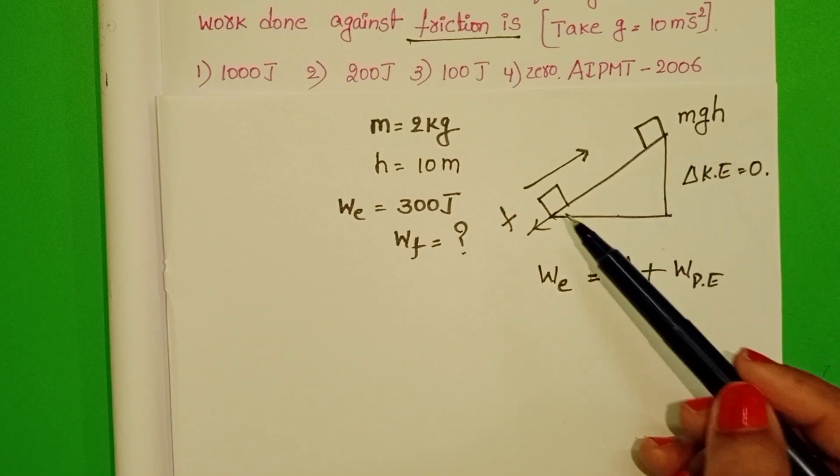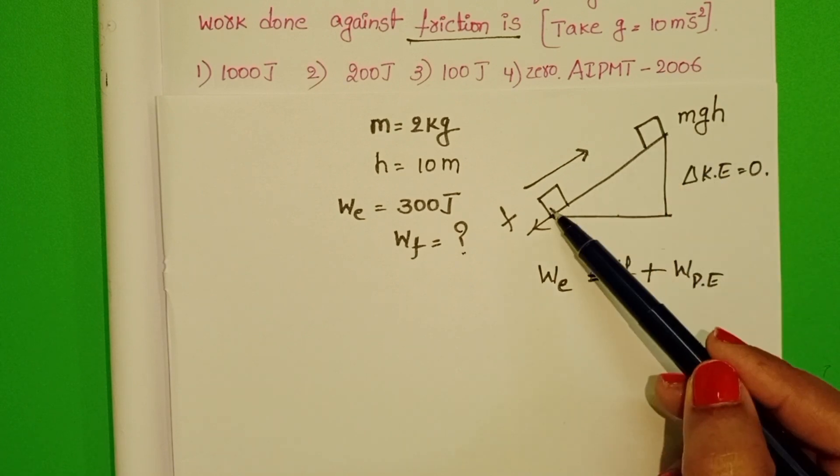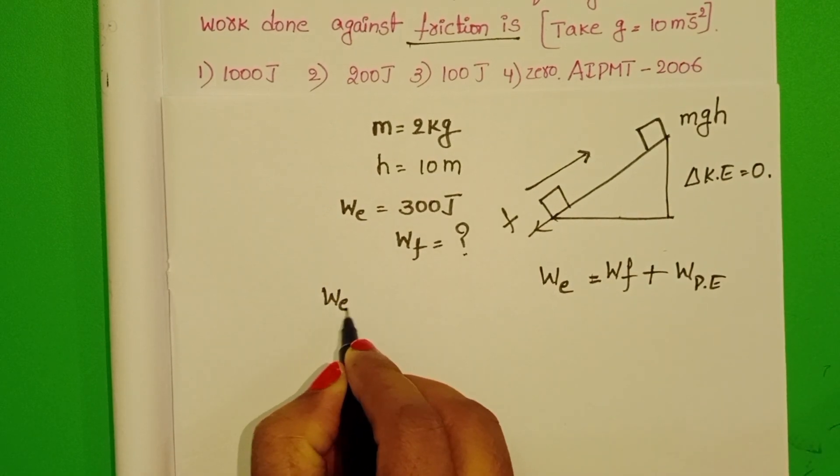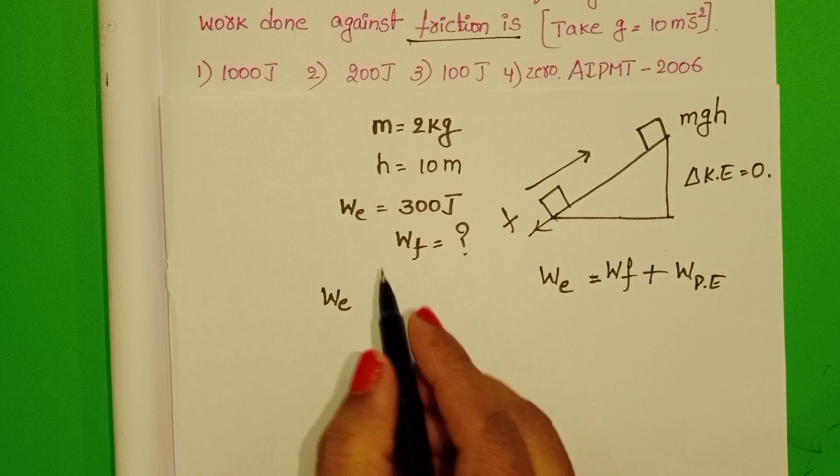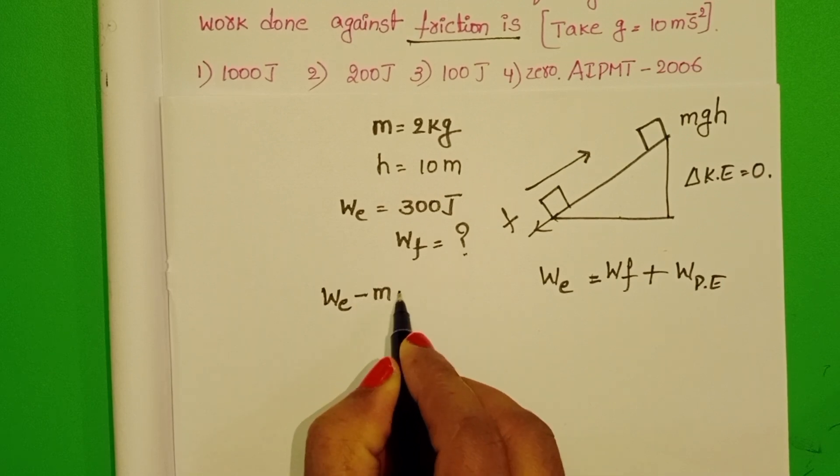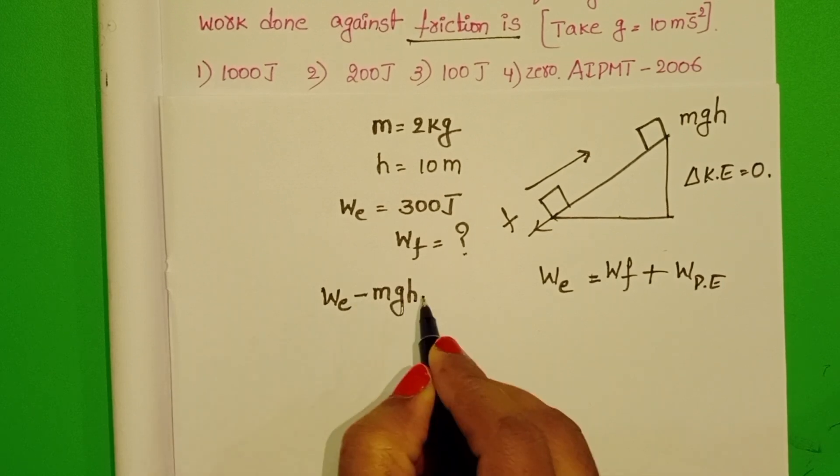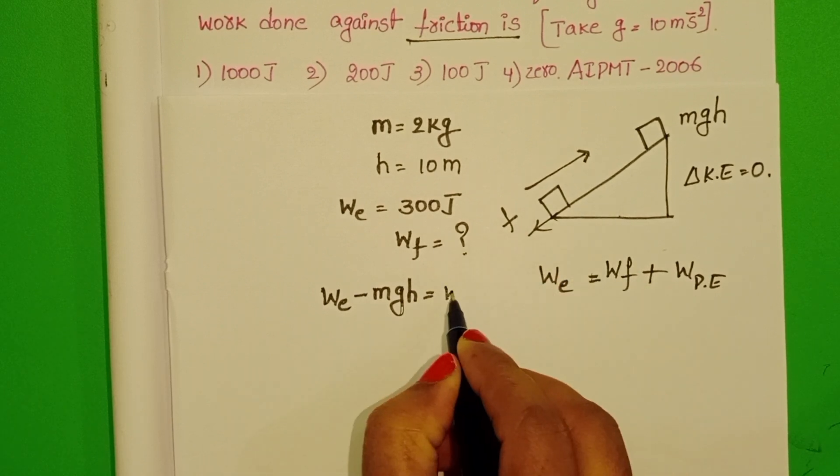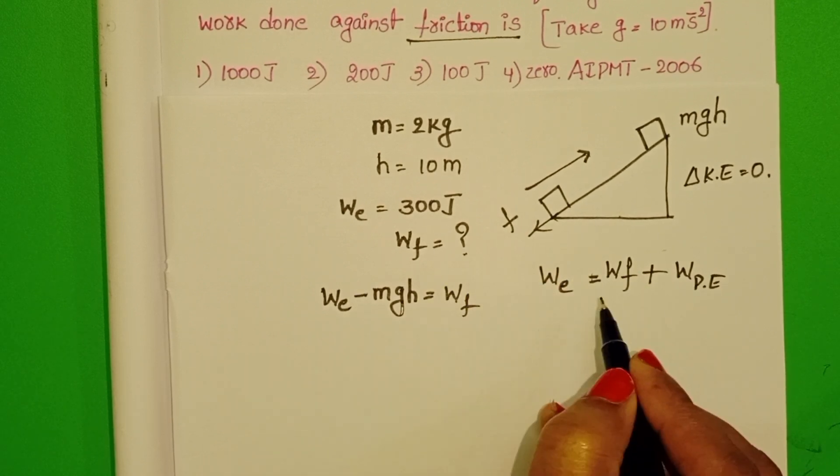Here potential energy and external energy, these two are acting in upward direction. But when we take the sign convention, g is negative. Then it becomes minus mgh. And work done by the frictional force in downward direction. So these two equations are the same.